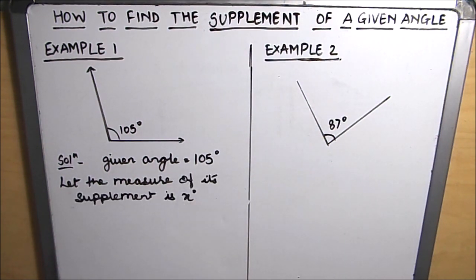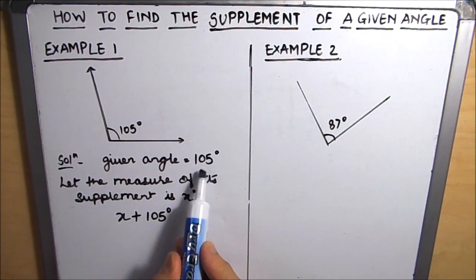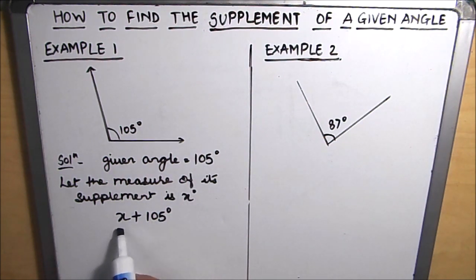According to the definition of supplementary angle, two angles are said to be supplement to each other when their sum is equal to 180 degrees. So here our given angle is 105 degrees and the supplement we need to find out is x degrees. So their sum should be equal to 180 degrees for them to be supplement to each other.